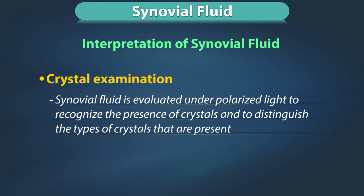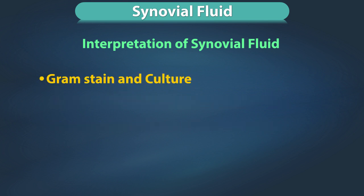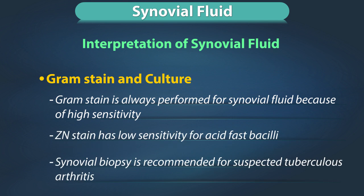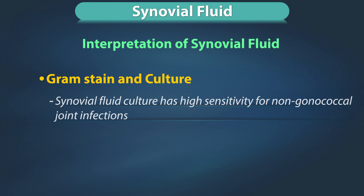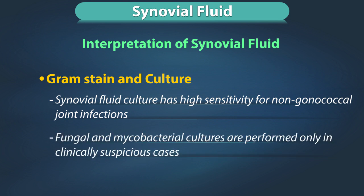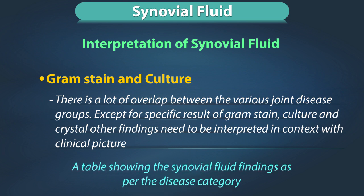Crystal examination: synovial fluid is evaluated under polarized light to recognize and distinguish the type of crystals present. Needle-like monosodium urate crystals are associated with gout, and calcium pyrophosphate crystals are associated with pseudogout. Gram stain is always performed for synovial fluid because of high sensitivity. Ziehl-Neelsen stain has low sensitivity for acid-fast bacilli in synovial fluid; a synovial biopsy is recommended for suspected tuberculous arthritis. Synovial fluid culture has high sensitivity for non-gonococcal joint infections. Fungal and mycobacterial cultures are performed only in clinically suspicious cases. There is a lot of overlap between various joint diseases; except for specific results of gram stain, culture, and crystal findings, other results need to be interpreted in context with the clinical picture.